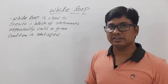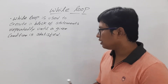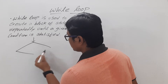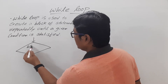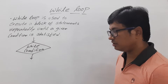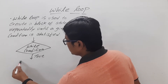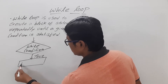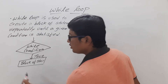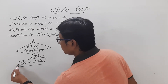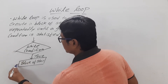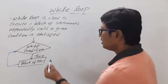Now let me draw the flowchart of a while loop, then I will discuss a program for better understanding. In the flowchart you will have a while condition, also called the test expression. If the condition is true, you will execute the block of statements — it can be a single statement or a group of statements. After executing this block of statements, you will again verify whether the condition is true or false.